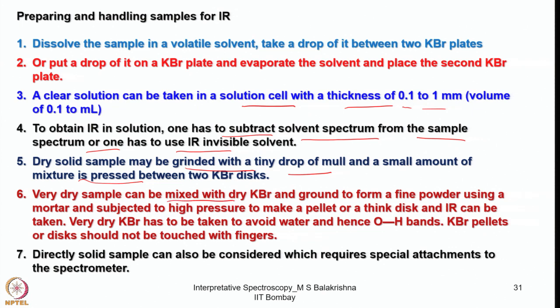Very dry samples can be mixed with dry KBr, ground to a fine powder using a mortar, and subjected to high pressure to make a pellet or thin disc for IR measurement. Very dry KBr must be used to avoid water and hence spurious OH bands. KBr is highly hygroscopic and one must ensure it is always anhydrous, and that atmospheric moisture does not contaminate the sample during preparation. KBr pellets or discs should not be touched with fingers.